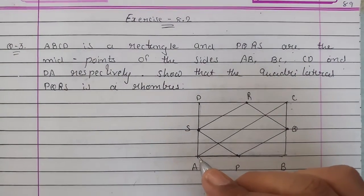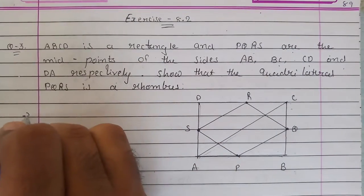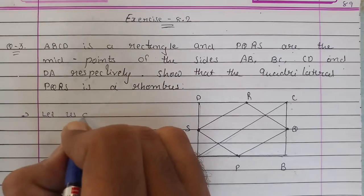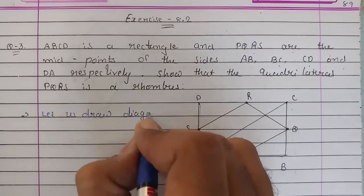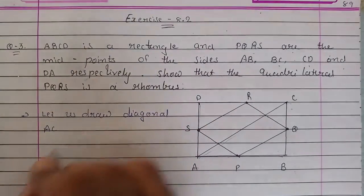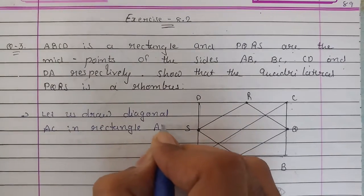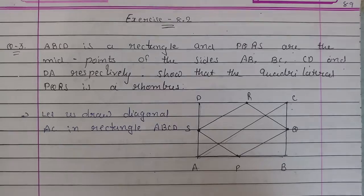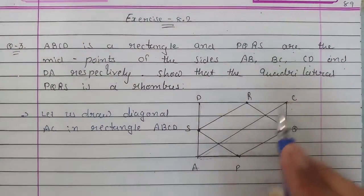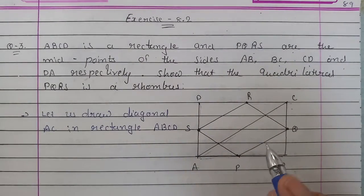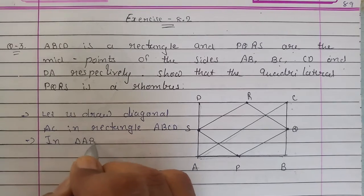And we draw this diagonal AC which is in this figure. Let's write this thing down. Now, let us draw diagonal AC in rectangle ABCD.